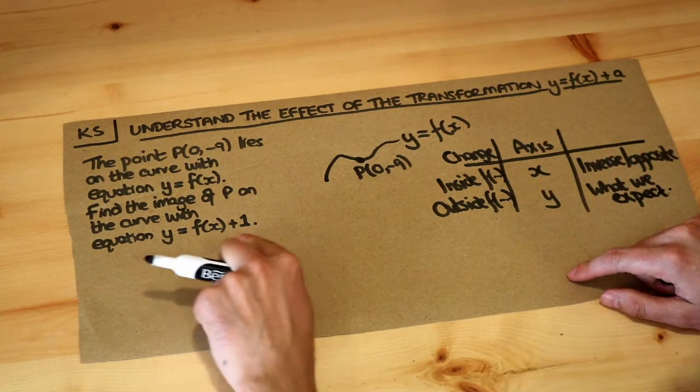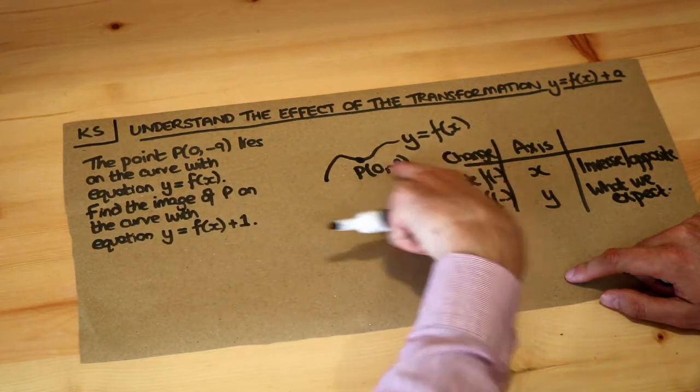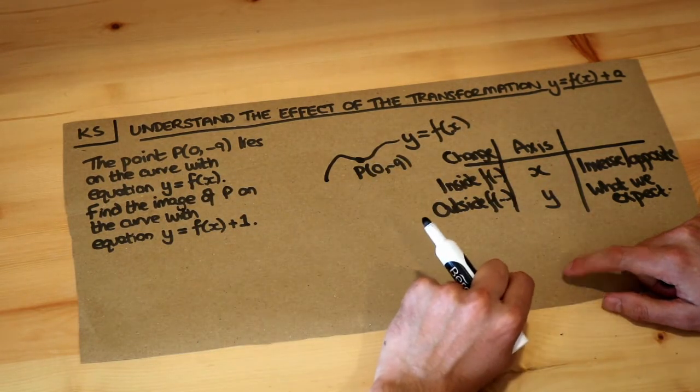Now let's look at this. Instead of sketching y equals f of x like we got here, we're sketching y equals f of x plus 1.